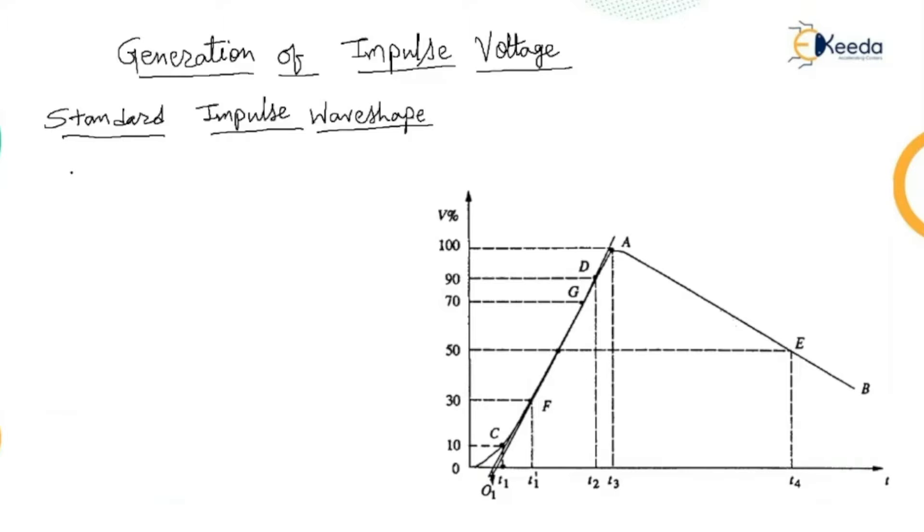Now, you can see this waveform where it is drawn between percentage voltage and time. This is in microseconds. As voltage is in percentage, the time is considered in microseconds. This waveshape is called as impulse waveshape or impulse wave.